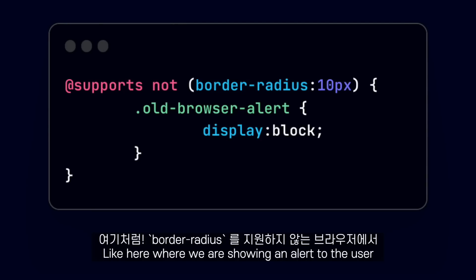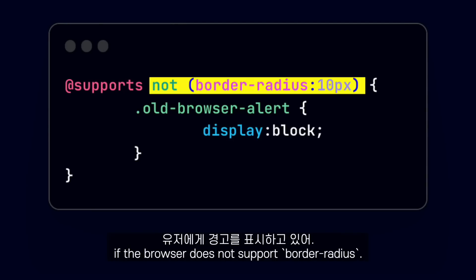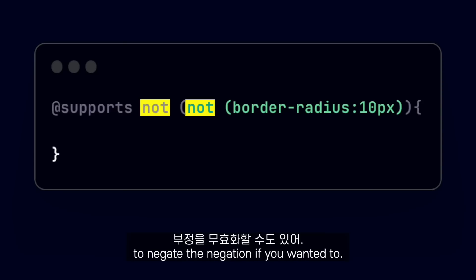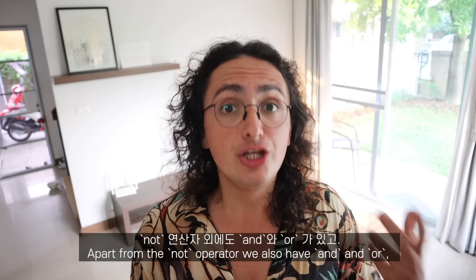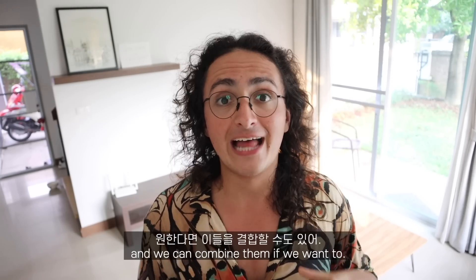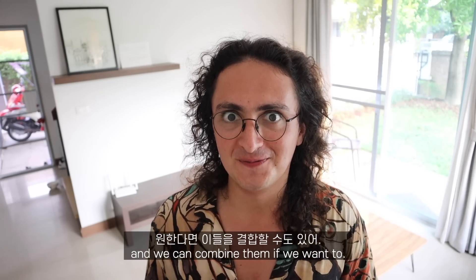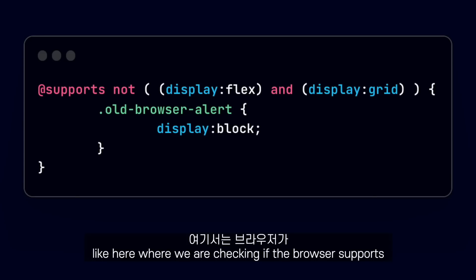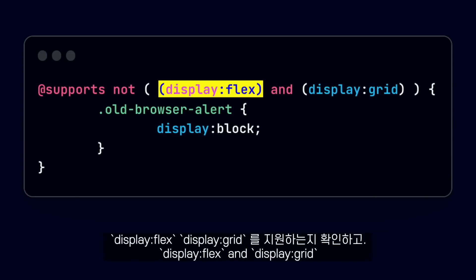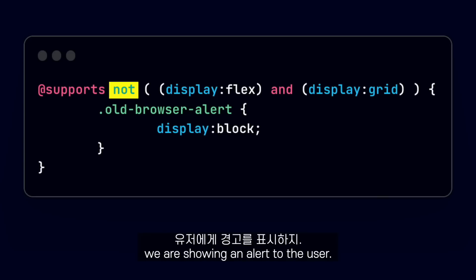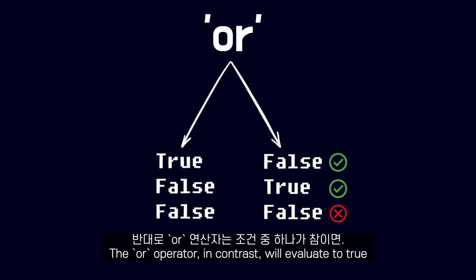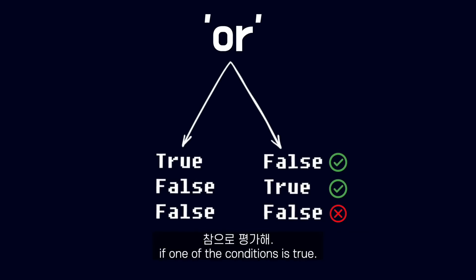We can also use the @supports rule with the not operator, which negates the expression. Like here where we are showing an alert to the user if the browser does not support border-radius. You could also chain multiple nots together to negate the negation if you wanted to. Apart from the not operator, we also have and and or, and we can combine them. The and operator checks if all the conditions are true, like here where we are checking if the browser supports display flex and display grid, and if that is not true, we are showing an alert to the user.